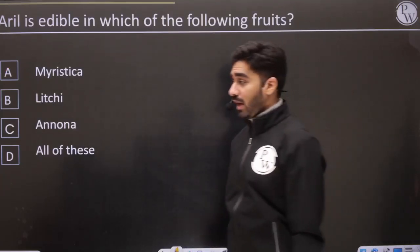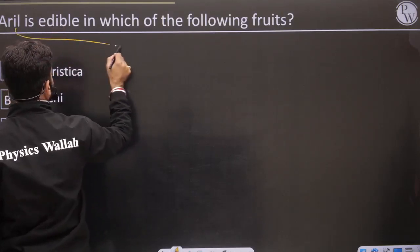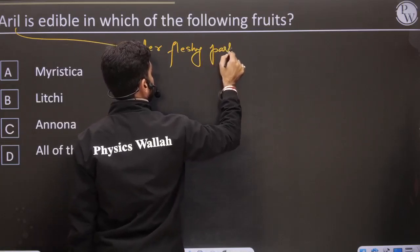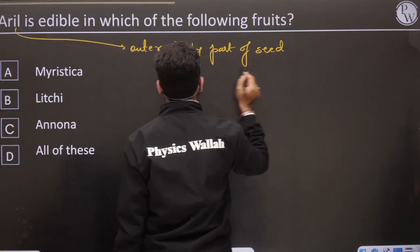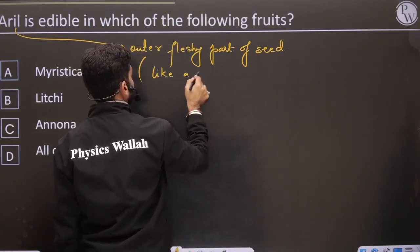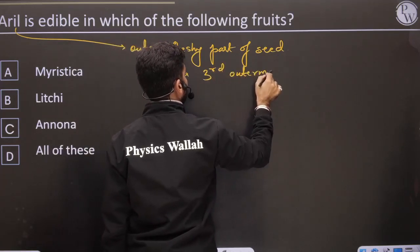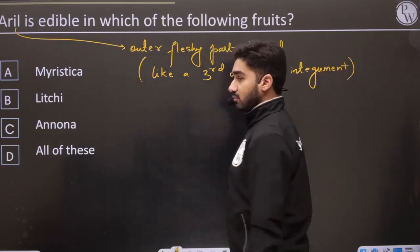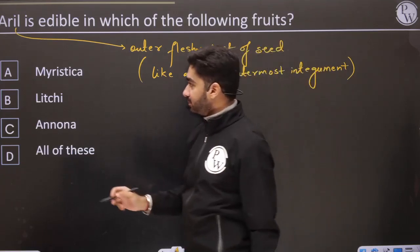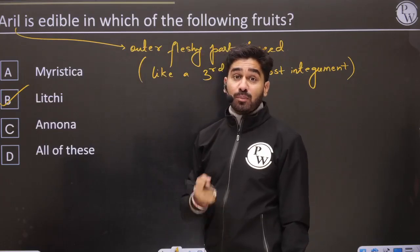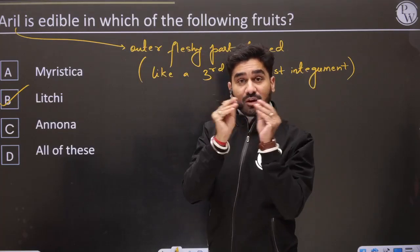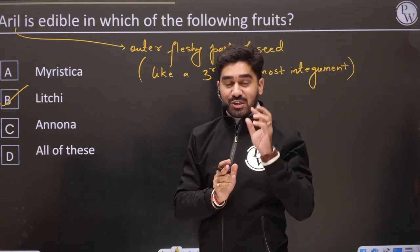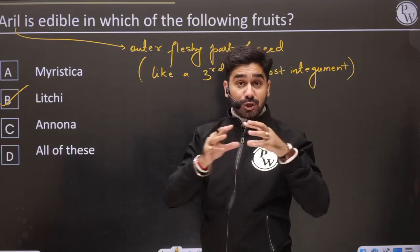Aril is the edible part in which fruit? Aril is the outer fleshy part — it is like a third outermost integument. In litchi, the fleshy part we eat — that is the aril. When you remove the pink cover of litchi, that is the pericarp. Litchi is a dry fruit, and its pericarp is not differentiated. The grey-colored fleshy part inside is the aril — the third integument that becomes fleshy.